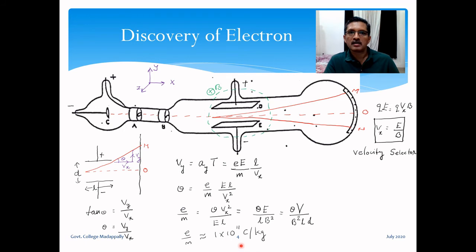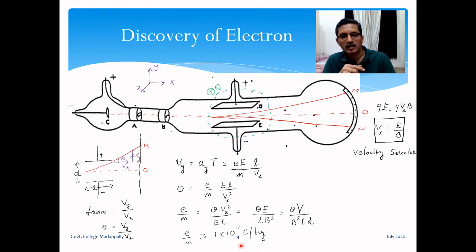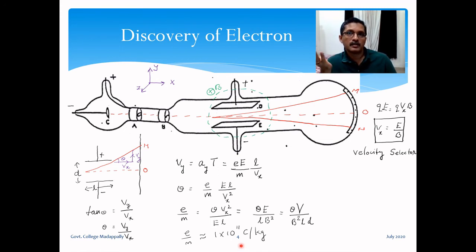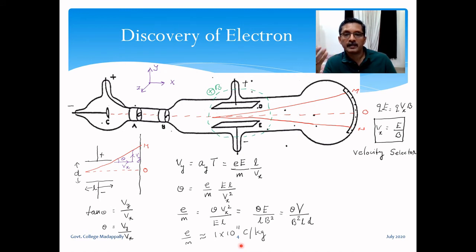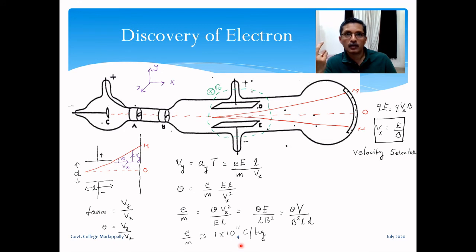Thomson did further experiments: the same charge-to-mass ratio measurements using different cathode materials. He found the same e/m value regardless of cathode material, showing the ratio is independent of cathode material. He also used different gases inside the discharge tube and again obtained the same value — independent of the nature of the gas. Furthermore, these particles were found to be the same as those emitted during photoelectric effect measurements.